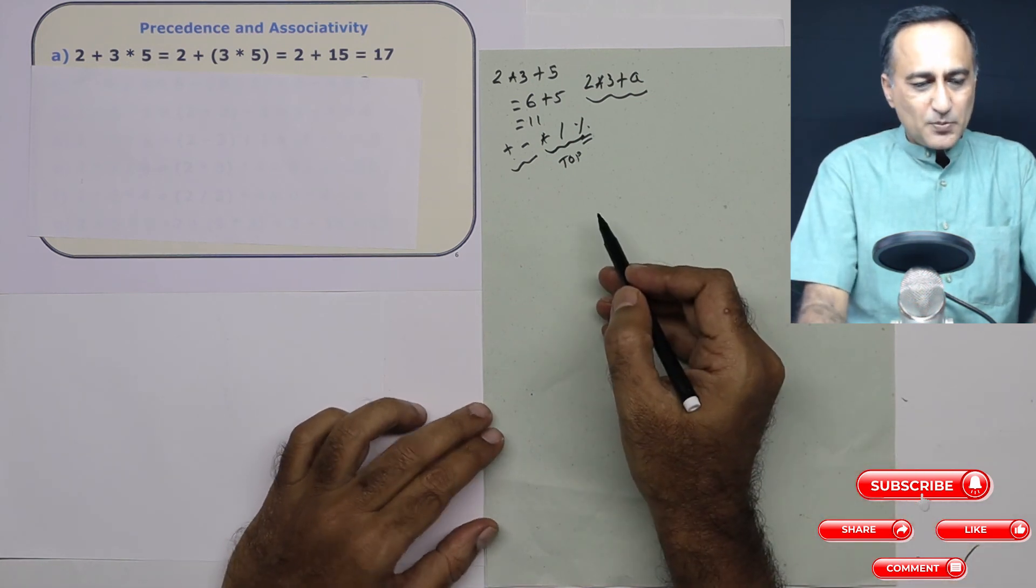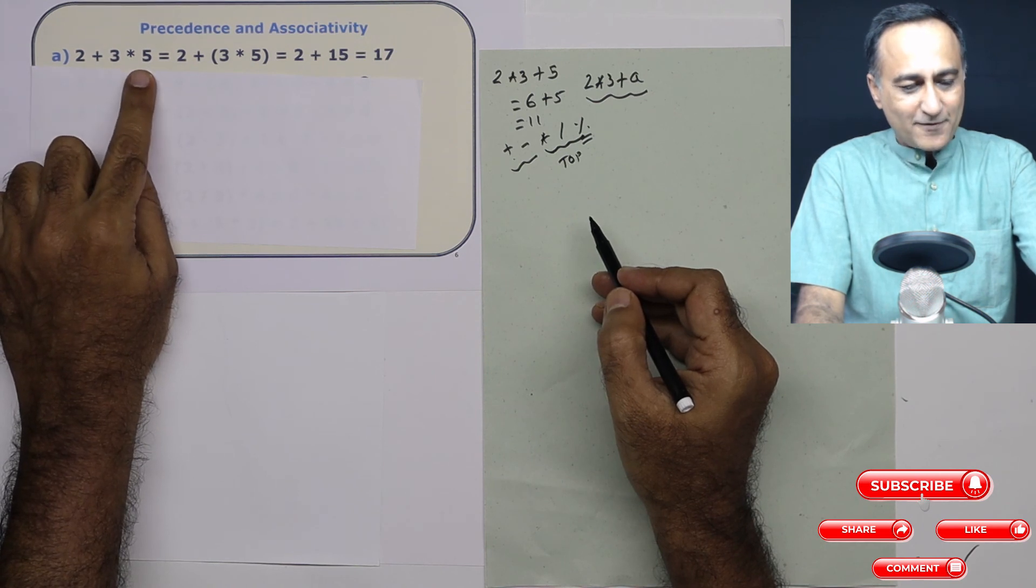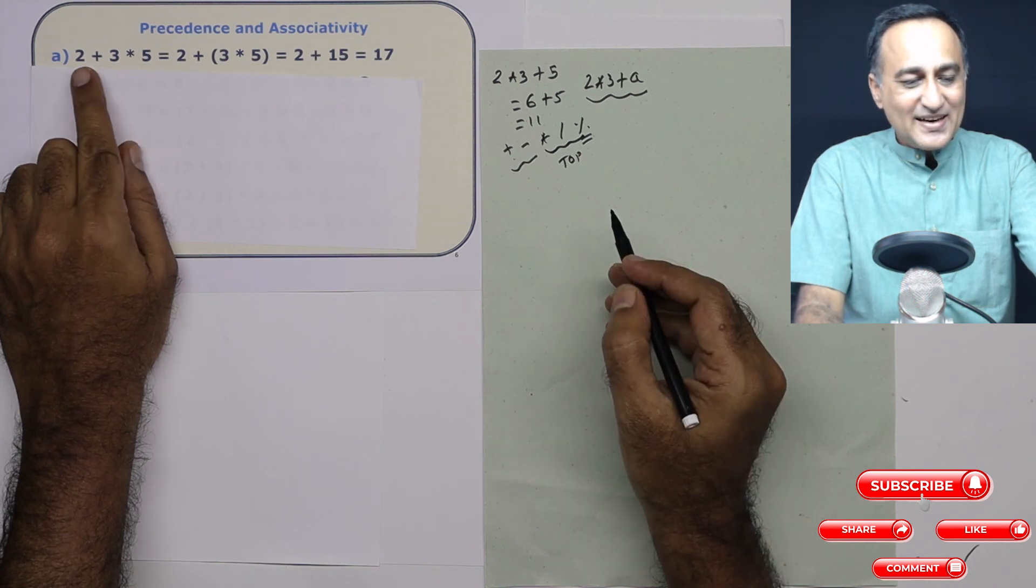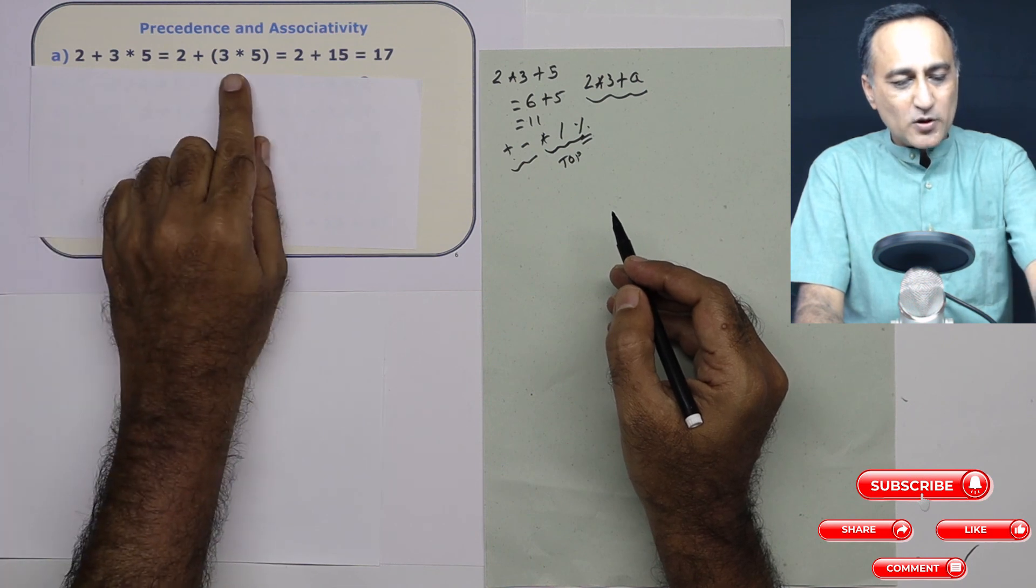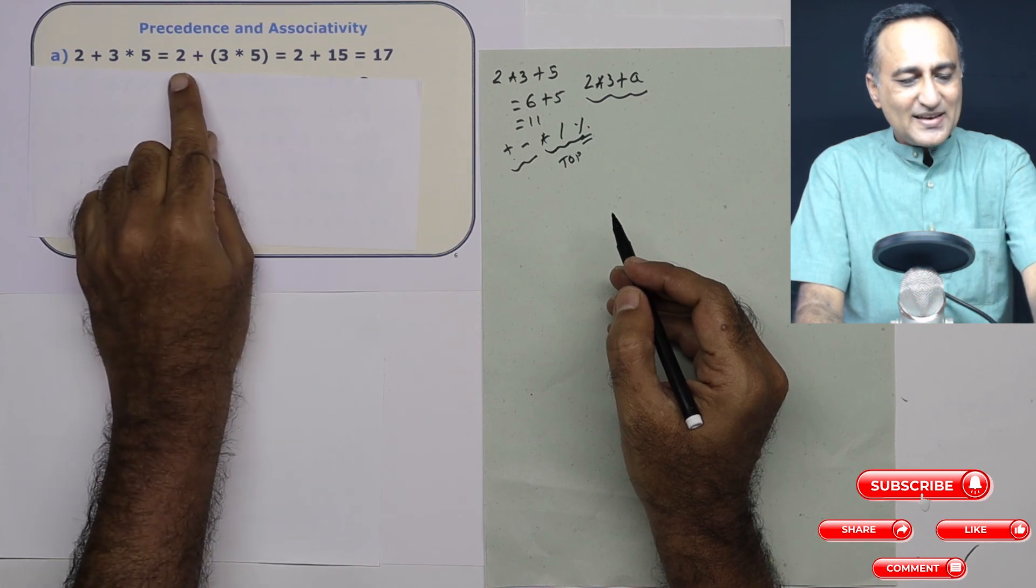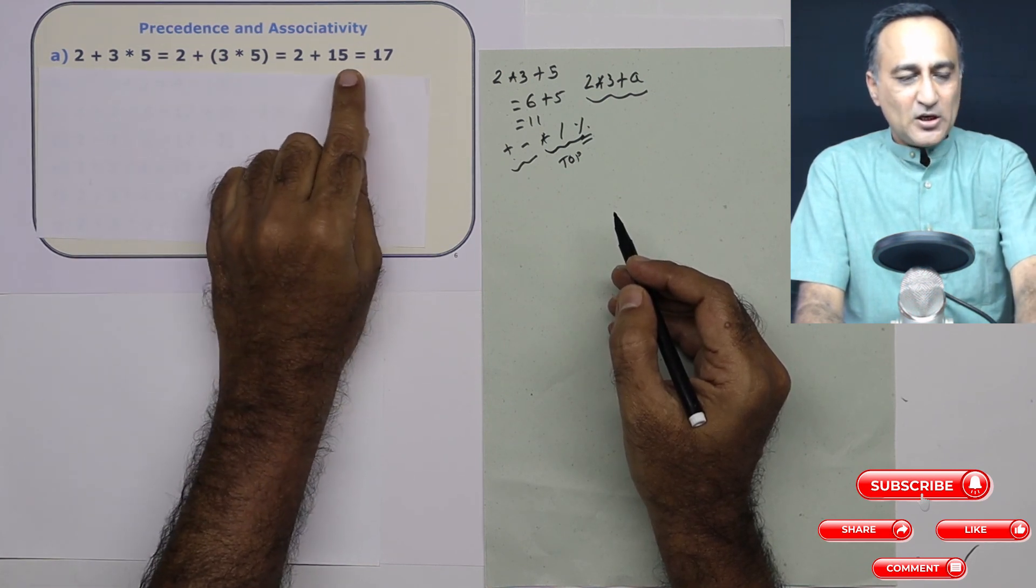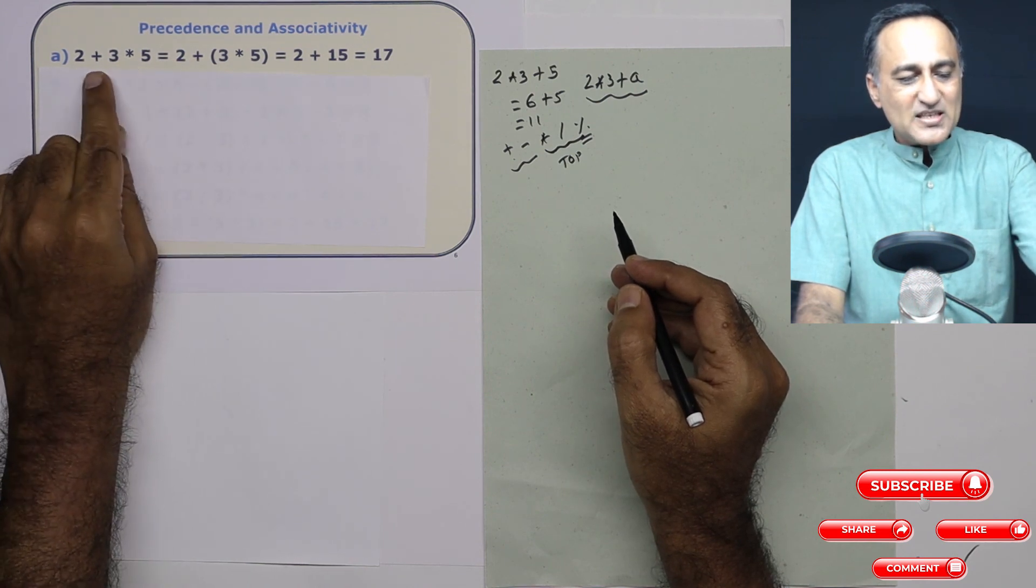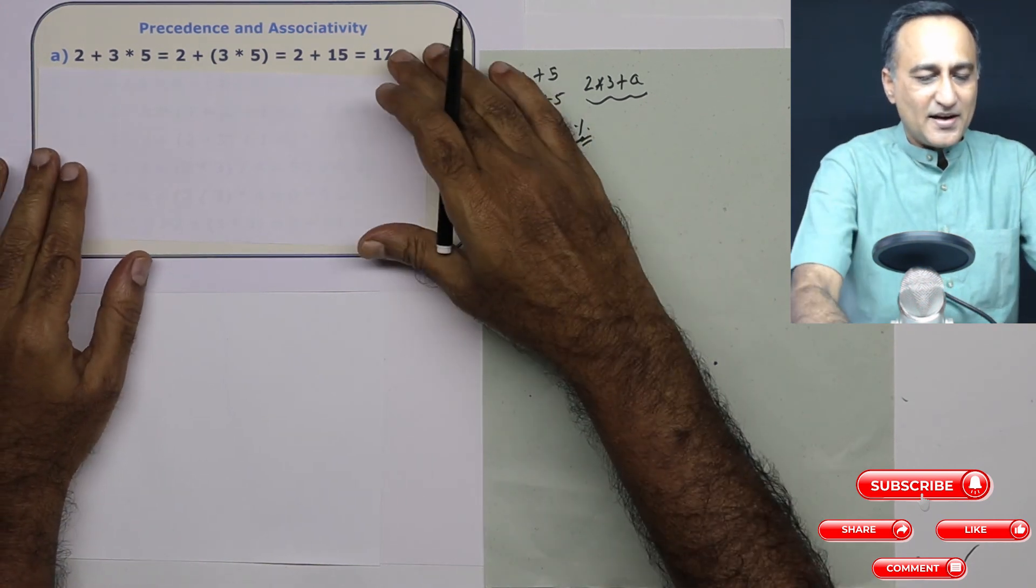So suppose I have this expression 2 plus 3 into 5. Now, if you see here, multiplication has more precedence than addition. So what I will do is I will first do 3 into 5. Then whatever is the result which happens to be 15, then that is added with 2 which results in an output of 17. There was no problem because the precedence of multiplication is higher than plus. So I do multiplication first and then the addition.